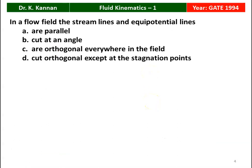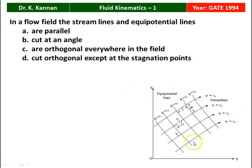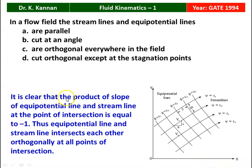The second question is again from the 1994 question paper. In irrotational flow field, the streamline and equipotential lines — options are: parallel, cut at an angle, orthogonal everywhere in the flow field, or cut orthogonal except at the stagnation points. The product of slopes of the equipotential line and streamline at the point of intersection is equal to minus 1. Thus, equipotential lines and streamlines intersect each other orthogonally at all points. The correct answer is option C — orthogonal everywhere in the field, meaning they are perpendicular to each other.